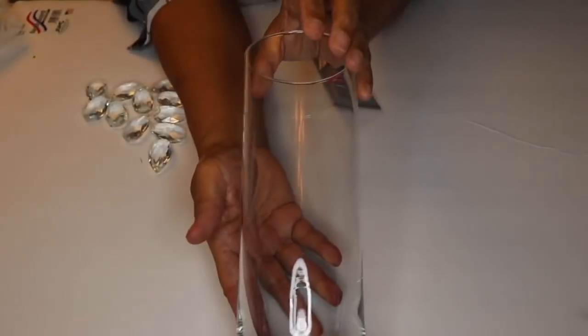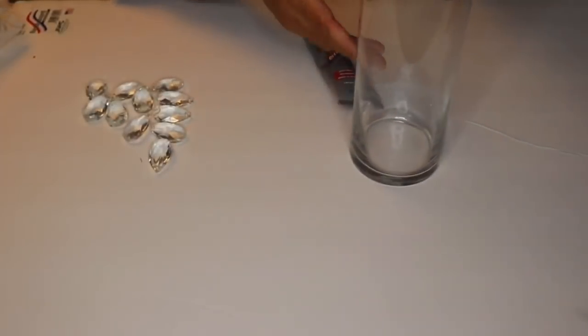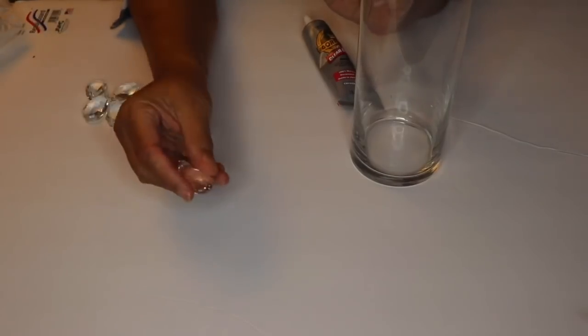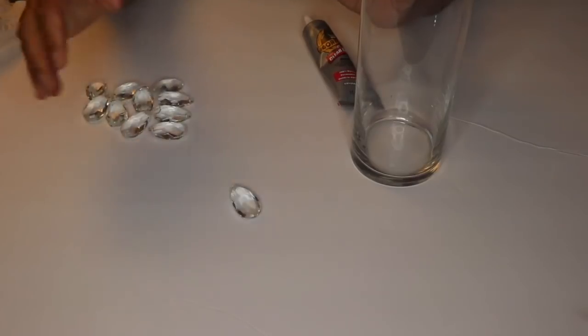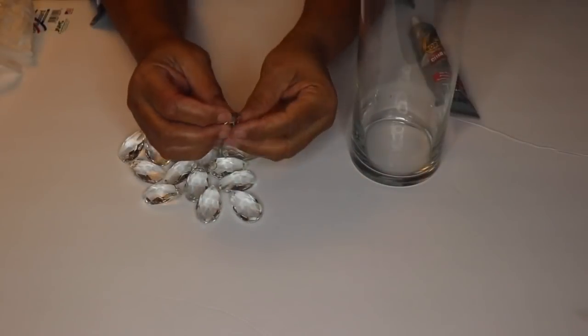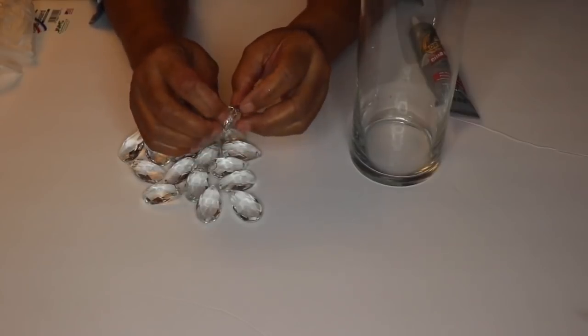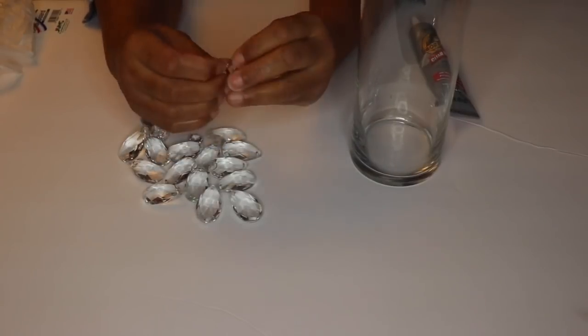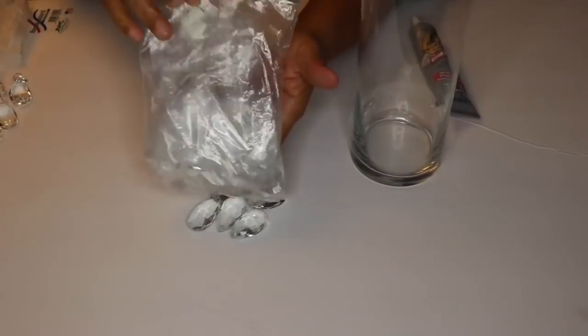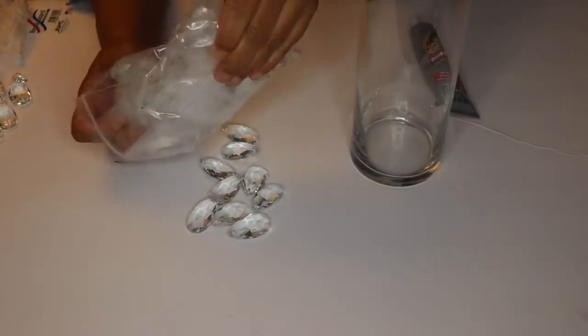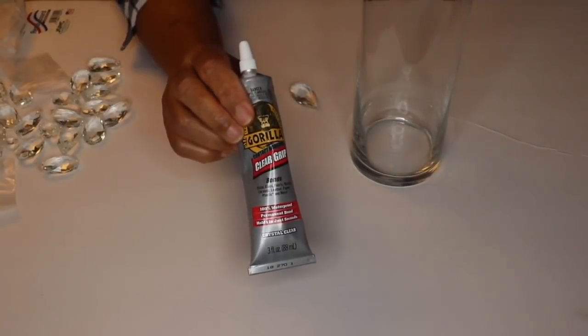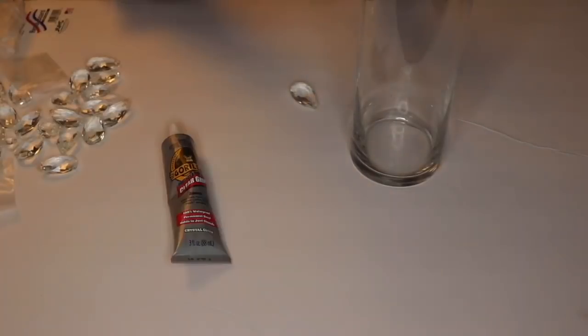Moving on to the second DIY. Here I have another one of the Dollar Tree vases and it's the taller ones. I'll leave the measurements in the description below and I also have some crystal pendants. Now what we're going to do is decorate the glass with these crystal pendants. So we'll need to remove these little glass discs from each pendant. I have a bag of pendants that I've already removed the discs from.